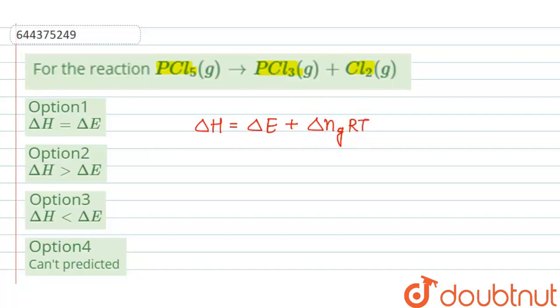Where delta H is change in enthalpy, delta E is change in internal energy, and delta NG is given as NP minus NR. That is, it is the difference between the number of moles of the gaseous products and those of the gaseous reactants.